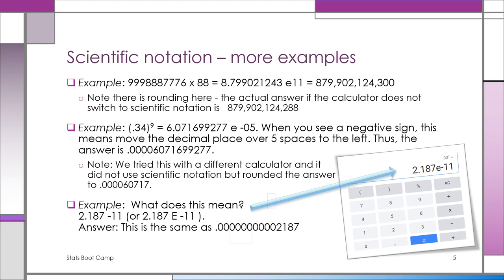The second example, we have 0.34 raised to the power of 9. And that's a very small number. We end up with 6.071699277, e to the negative 5. So it's times 10 to the minus 5. And it's a minus sign, so you move the decimal place 5 decimal spaces to the left. And you end up with 0.0000607, etc. And because of the way things are displayed and because every calculator and every application has a different amount of spaces formatted, it's going to look different in different calculators and in different ways.